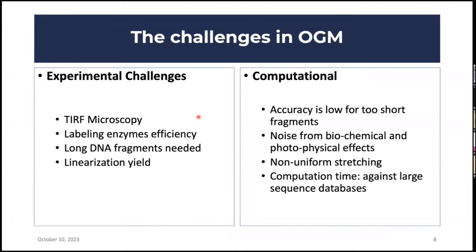On the experimental side, total internal reflection microscopy is needed because the signal is very low — it filters out background noise and captures light from very close to the cover slip. The labeling enzymes sometimes have low efficiency and must label only the target pattern. Long enough DNA fragments are needed since we're imaging with fluorescence microscopy. The linearization of DNA on the surface also has questionable yields, so making sure molecules stick and linearize is a challenge.